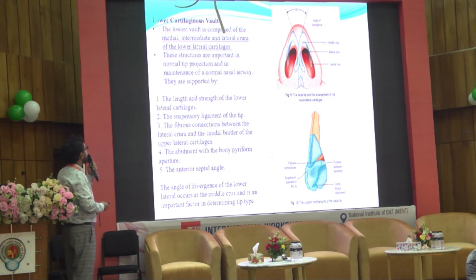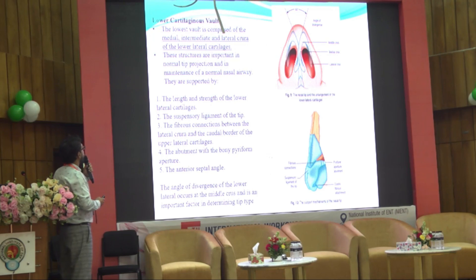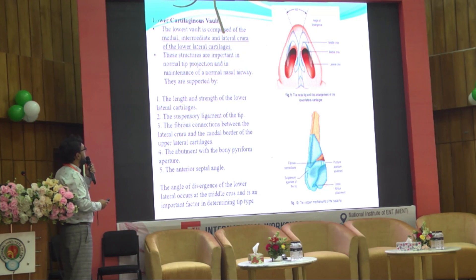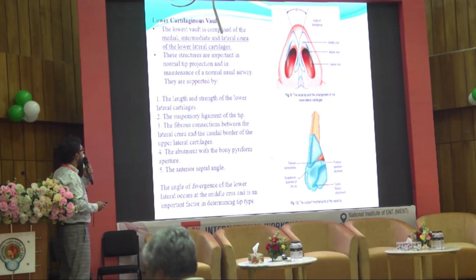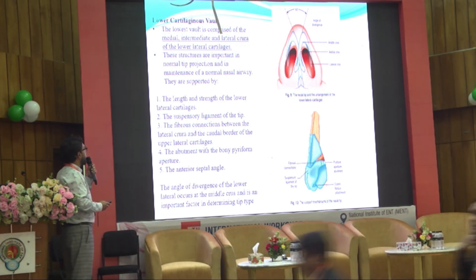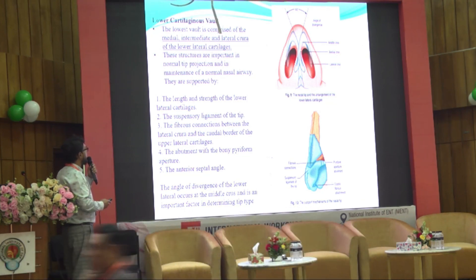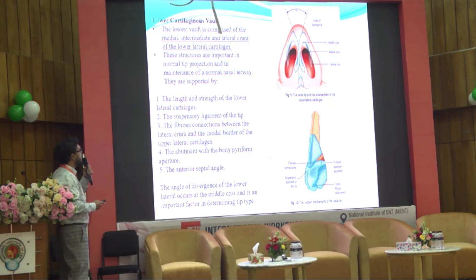The lower lateral vault comprises the medial crus, middle crus, and lateral crus. This structure is important for tip projection and maintenance of the normal nasal airway. The lower lateral cartilage will be discussed further in the tip section.